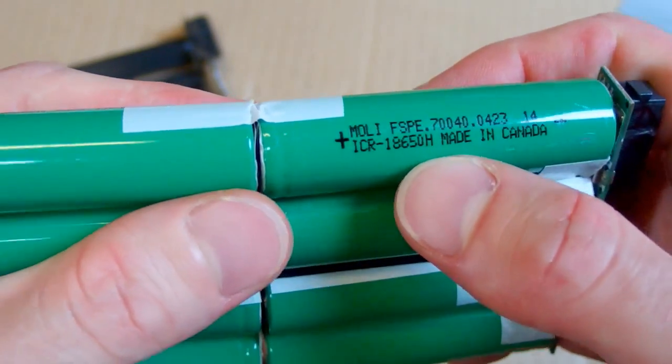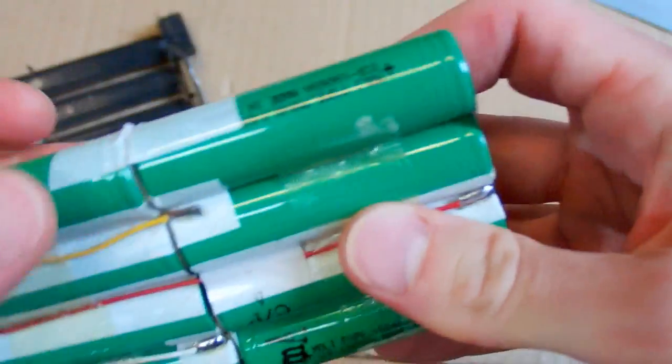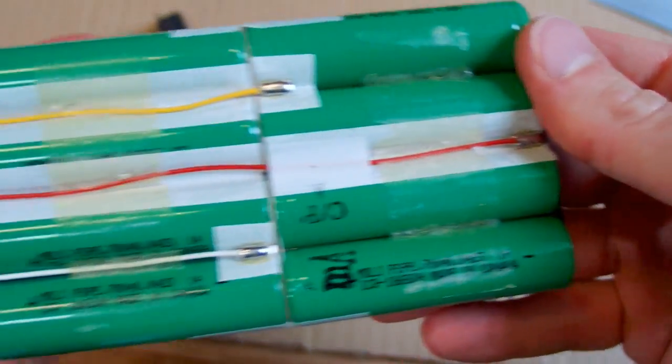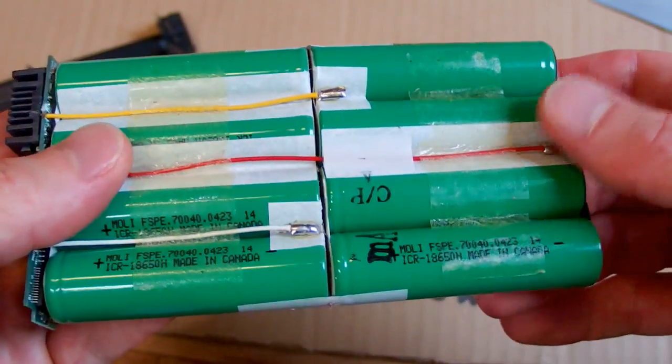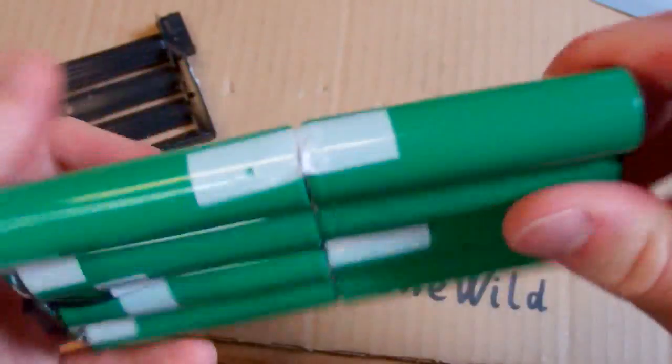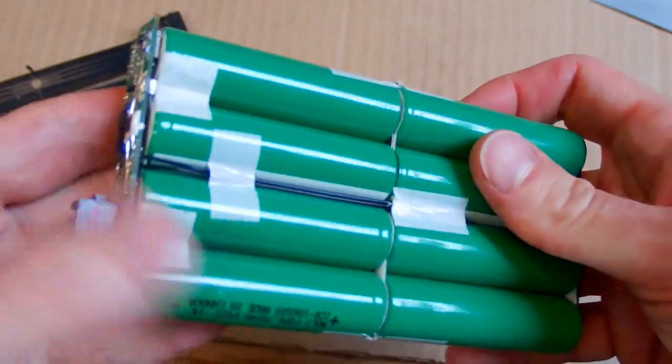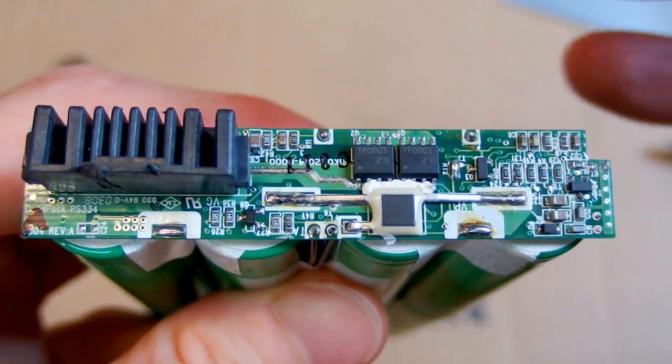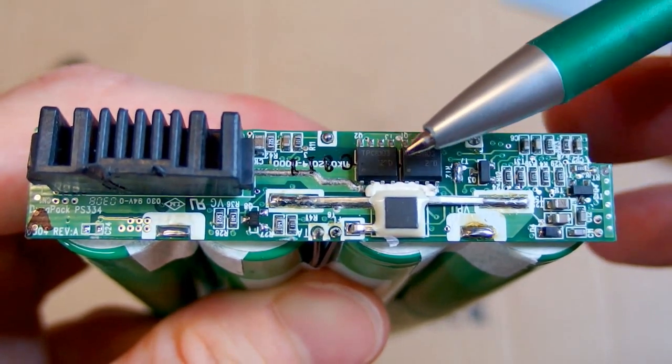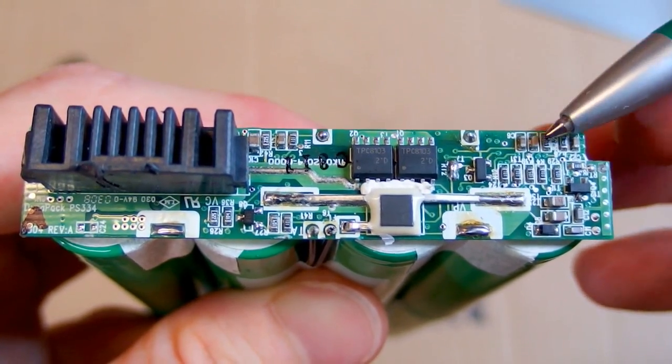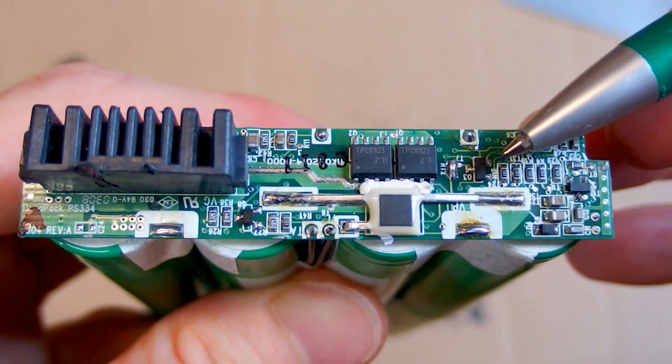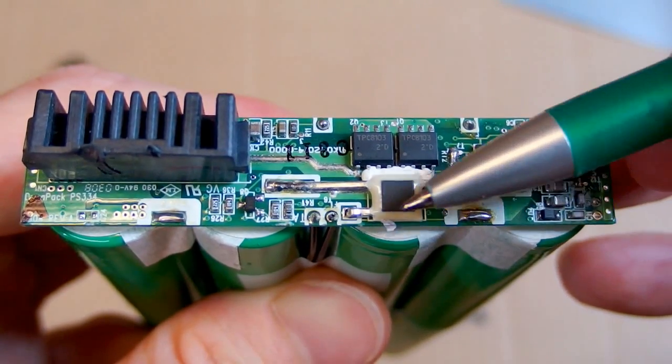It looks good, but there is nothing about the capacity. Looks nice, there are some connections. Maybe even some temperature sensors. So there is the control board with the connector. Some power MOSFETs, resistors, capacitors, small transistors, and what is this?